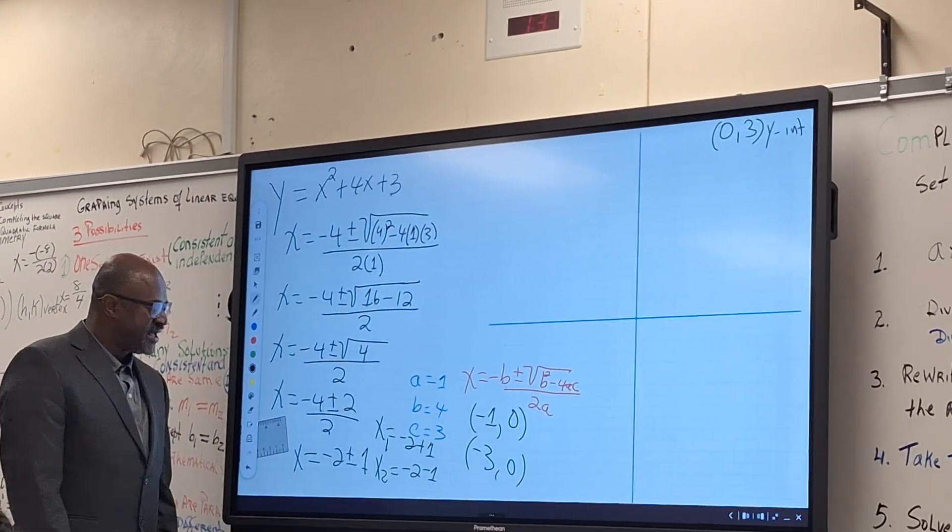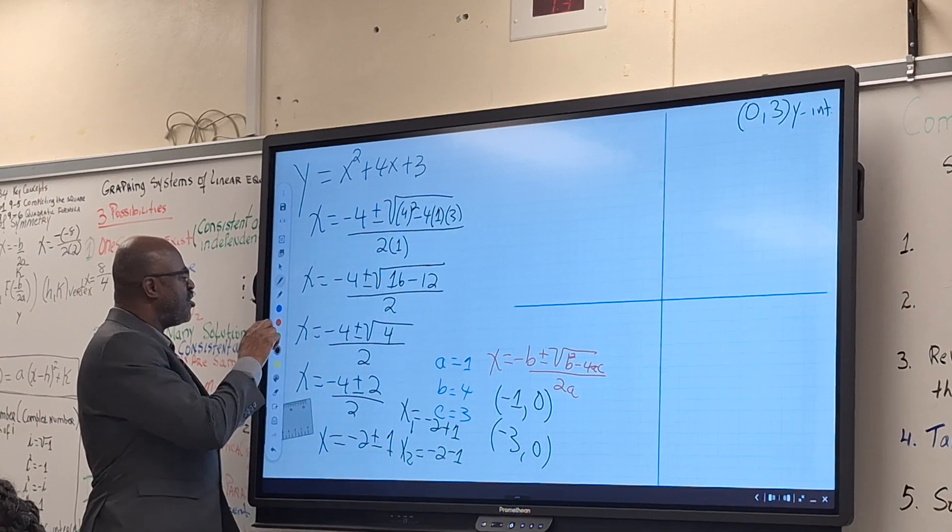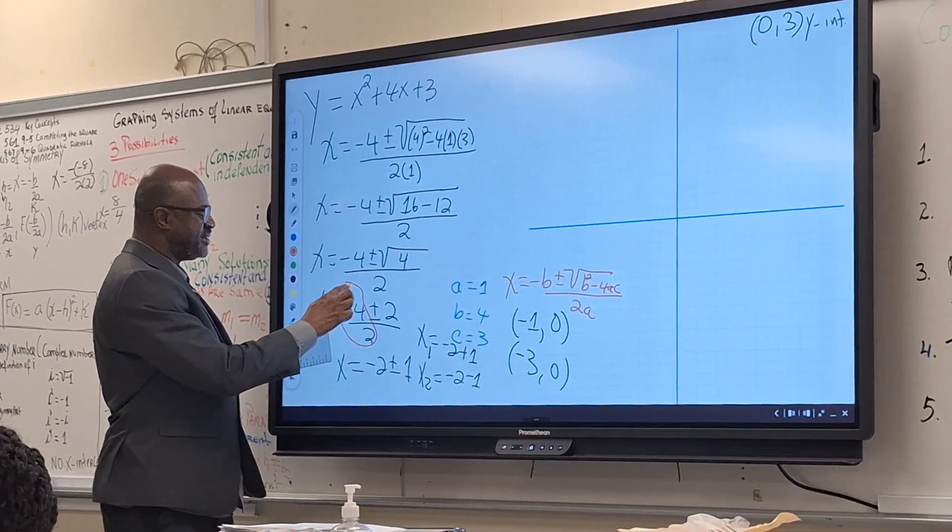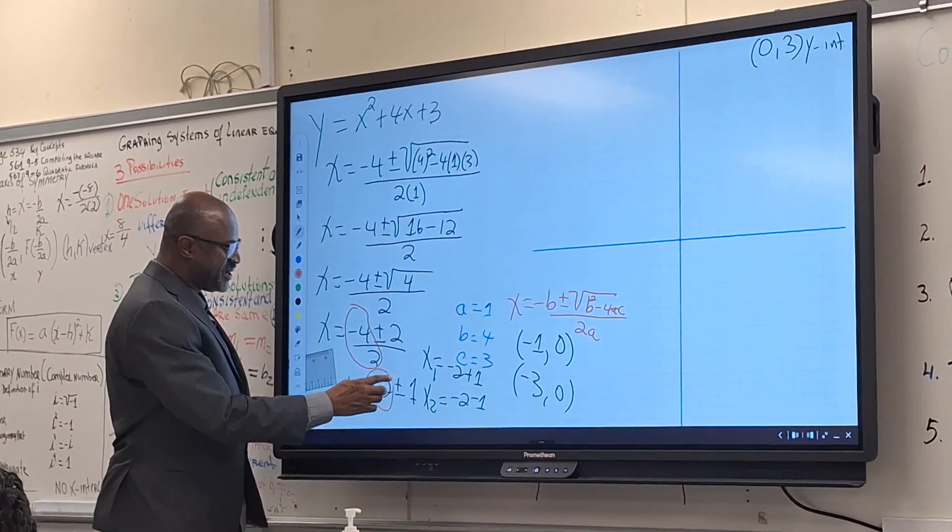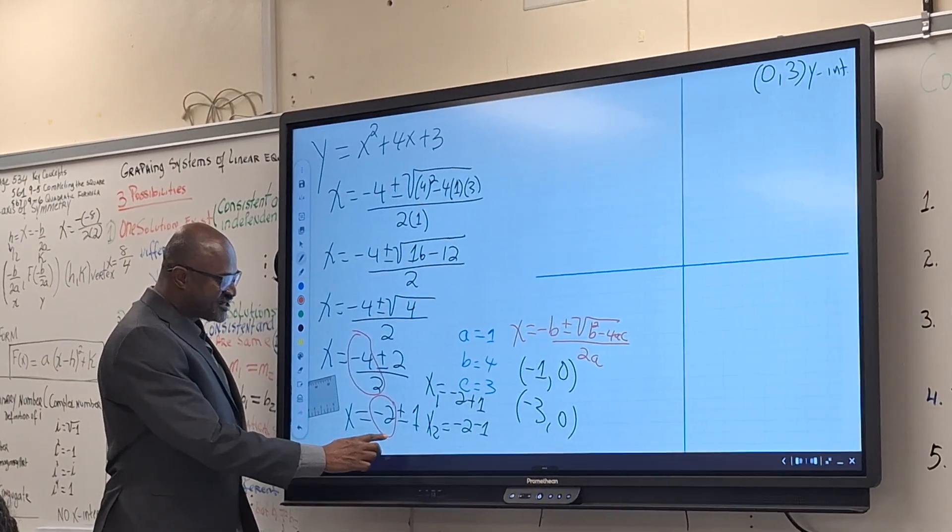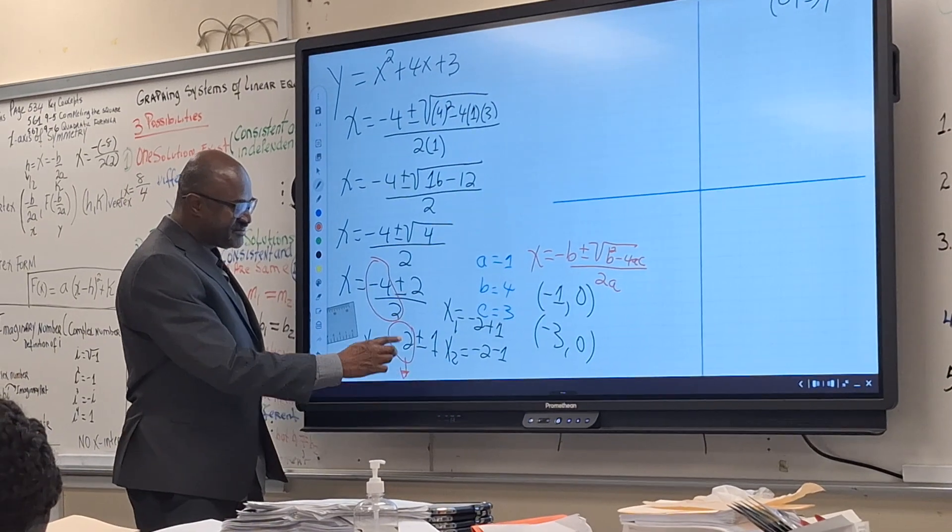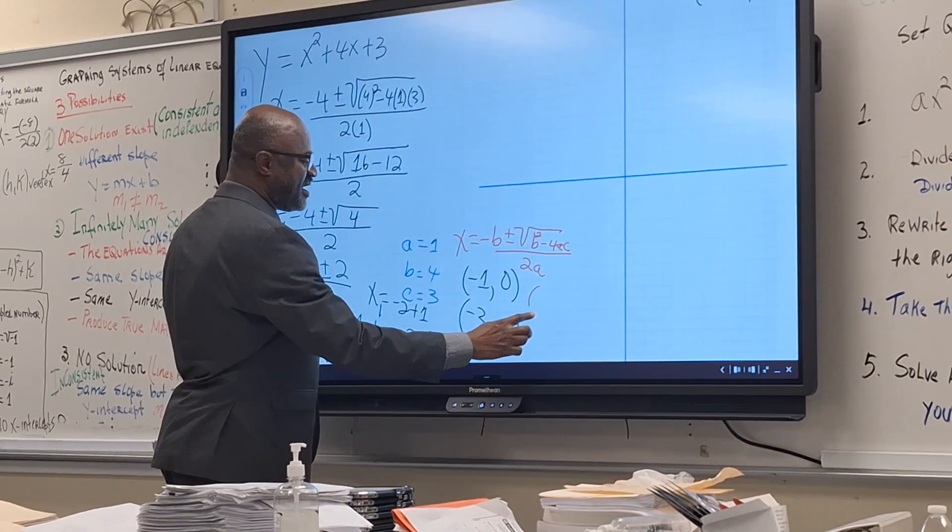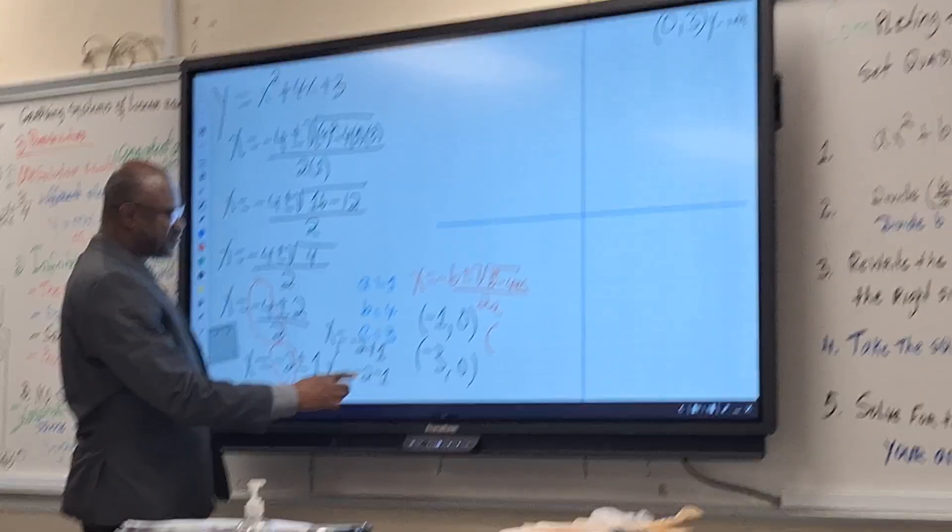Now guys pay attention. Your x-axis of symmetry is minus b over two a. This is minus b over two a. That will be this here. This is the x-coordinate of the vertex. Then for the x-coordinate of the vertex, we have negative two.